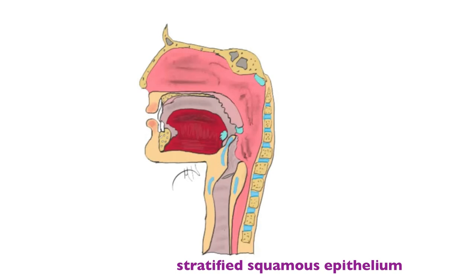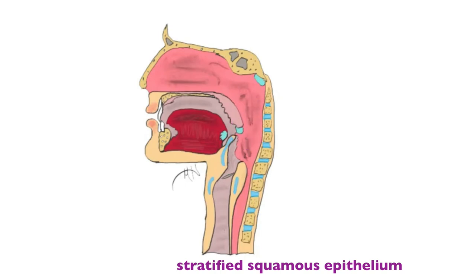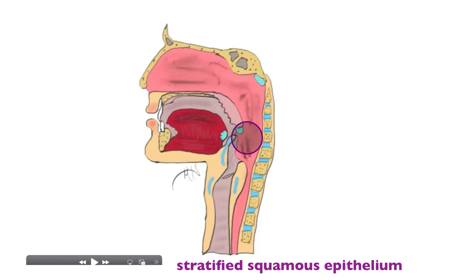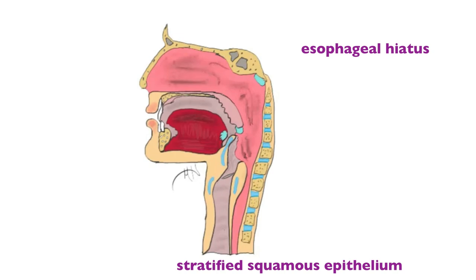The oropharynx and laryngopharynx are composed of stratified squamous epithelial tissue, while the nasopharynx is composed of pseudostratified columnar epithelial tissue. The reason the oropharynx and laryngopharynx have stratified squamous is due to the abrasion from the passage of the bolus from the oral cavity into the pharynx en route to the esophagus. The esophagus is also composed of stratified squamous epithelial tissue, and the opening in the diaphragm it passes through is the esophageal hiatus.